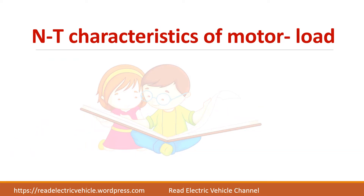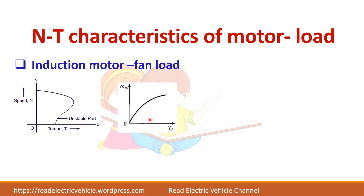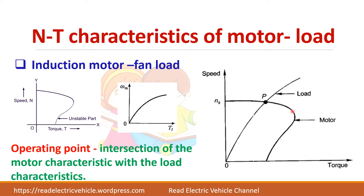Consider the speed-torque characteristics of an induction motor fed fan load. The motor characteristics and load characteristics intersect at the operating point. To determine stability, we check whether the system can return to this original operating point after a disturbance. If it returns to the original position, the point is stable; if it cannot, the point is unstable.